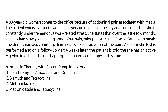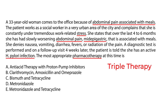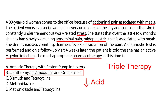Vignette 2: A 33-year-old woman presents with slowly worsening epigastric abdominal pain associated with meals over four to six months, under significant work-related stress. She denies nausea, vomiting, diarrhea, or fever. Diagnostic testing confirms an active H. pylori infection. The most appropriate pharmacotherapy is triple therapy — a proton pump inhibitor such as omeprazole plus two antibiotics to eradicate the bacteria — choice C. The other choices represent only partial components of triple or quadruple therapy.